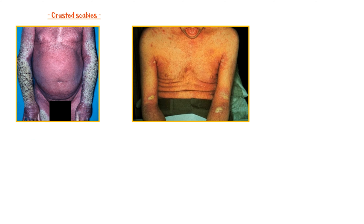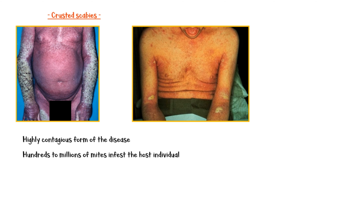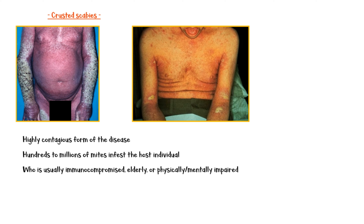Crusted scabies is a distinctive and highly contagious form of the disease. In this variant, hundreds to millions of mites infest the host individual, who is usually immunocompromised, elderly, or physically or mentally impaired. Risk factors for scabies include young age, presence of many children in the household, poor housing, sharing clothes and towels, and irregular use of showers.